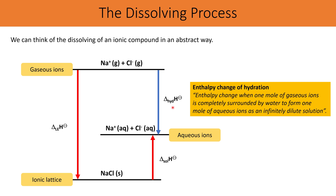With all Born-Haber cycles, equivalent routes are equal to each other. Route 1 — gaseous ions to solid ionic compound via lattice enthalpy, then to aqueous ions via enthalpy change of solution — equals Route 2 — directly from gaseous ions to aqueous ions via enthalpy change of hydration. Note that the enthalpy change of hydration is normally divided into separate steps for each ion, for example the hydration of sodium and then the hydration of chloride.